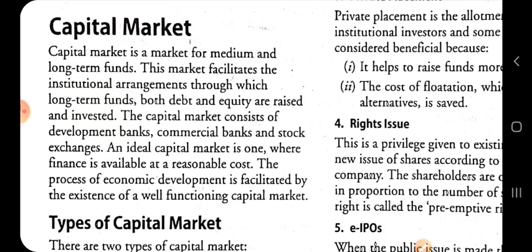The ideal capital market is where finance is available at reasonable cost for the long term period — where both debt funds and equity funds are available at reasonable cost. Reasonable cost means companies pay a reasonable interest on debt funds, and dividend is paid on equity funds or preference shares. The cost of both types of funds should be reasonable.